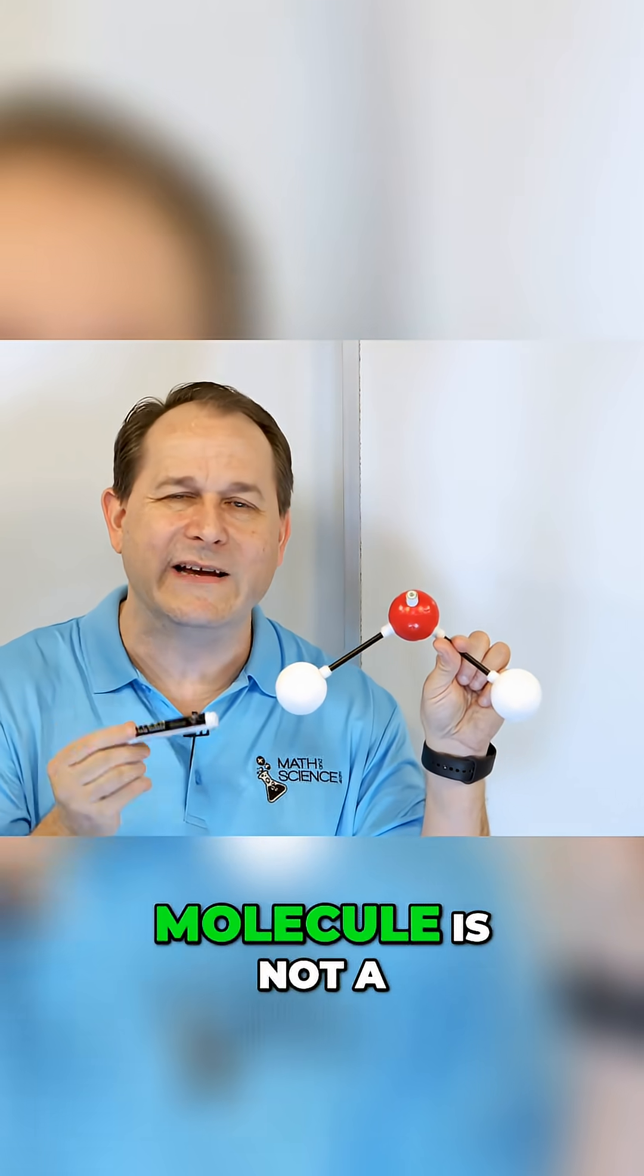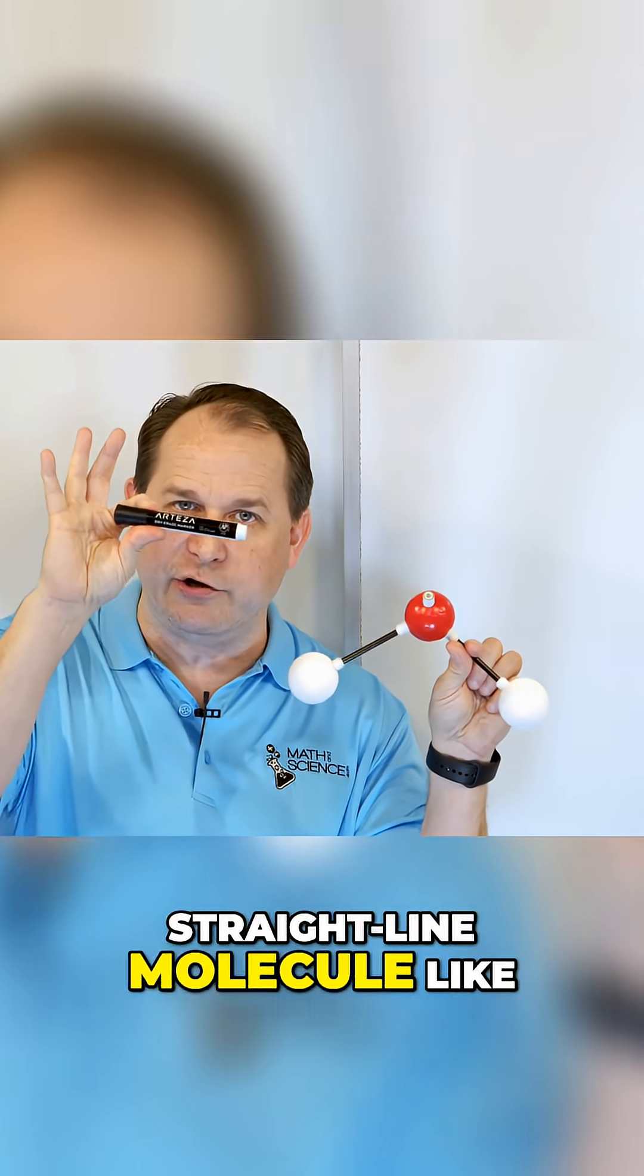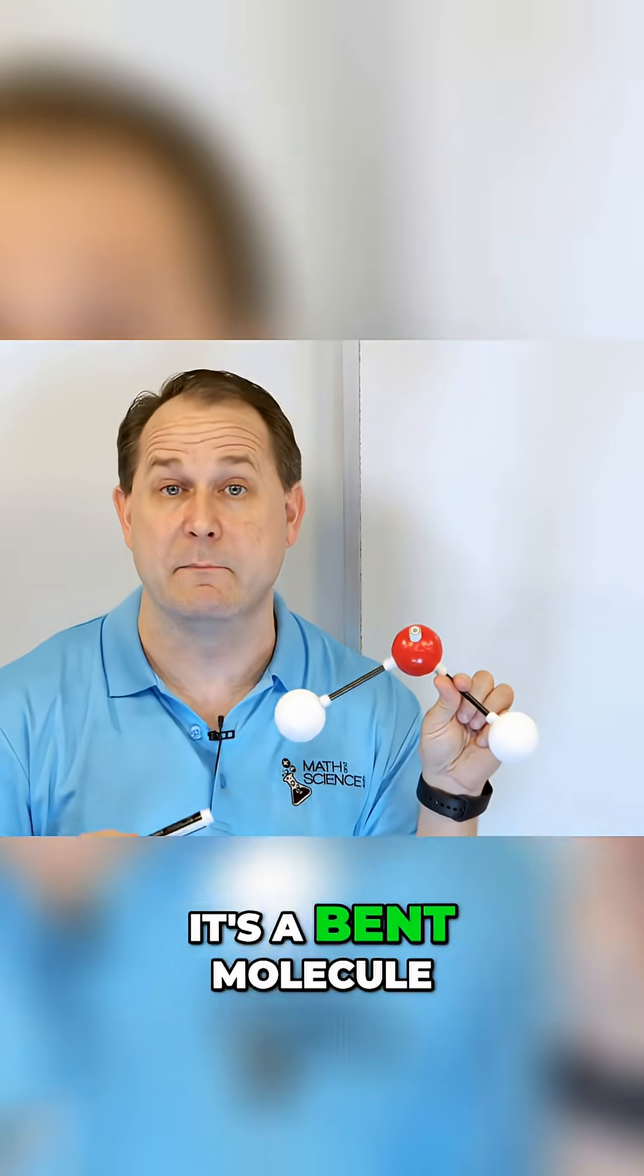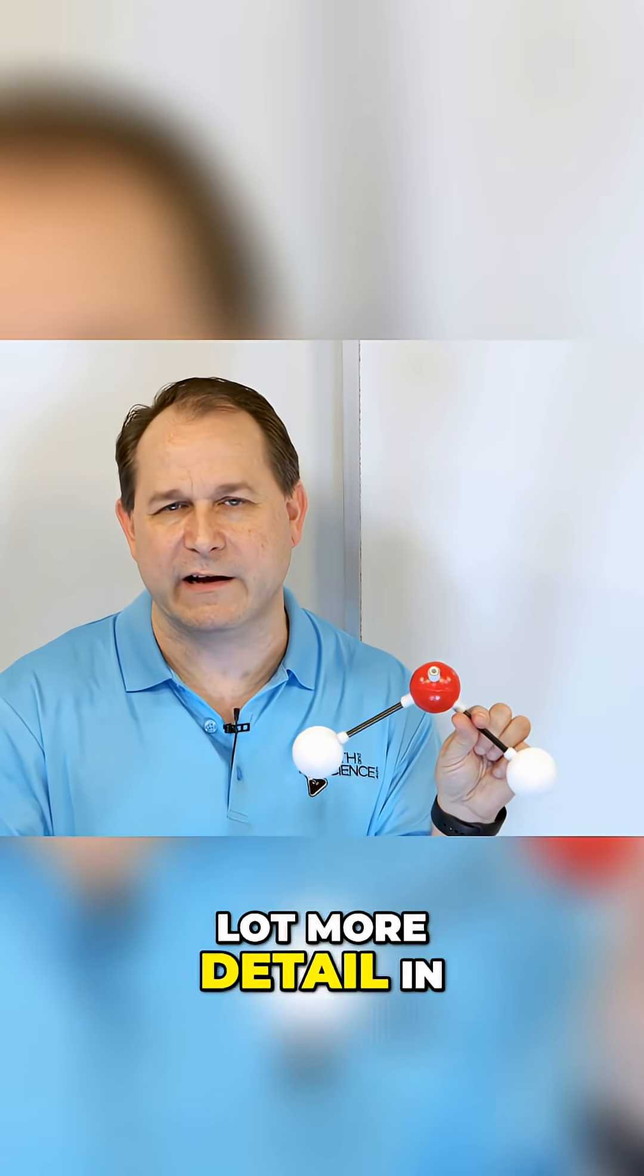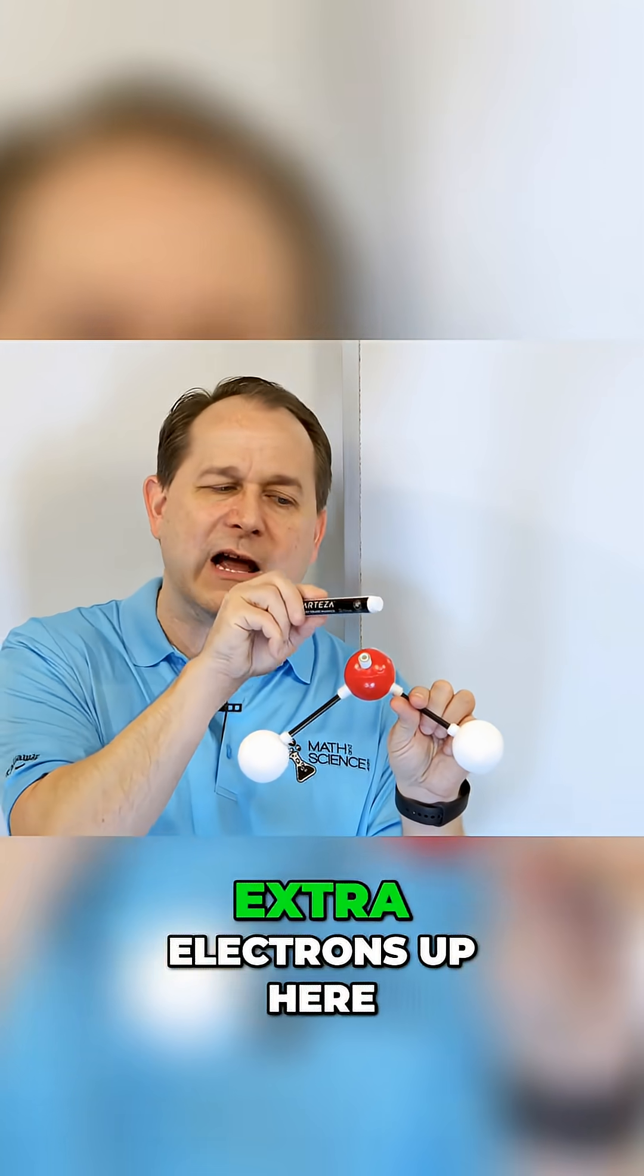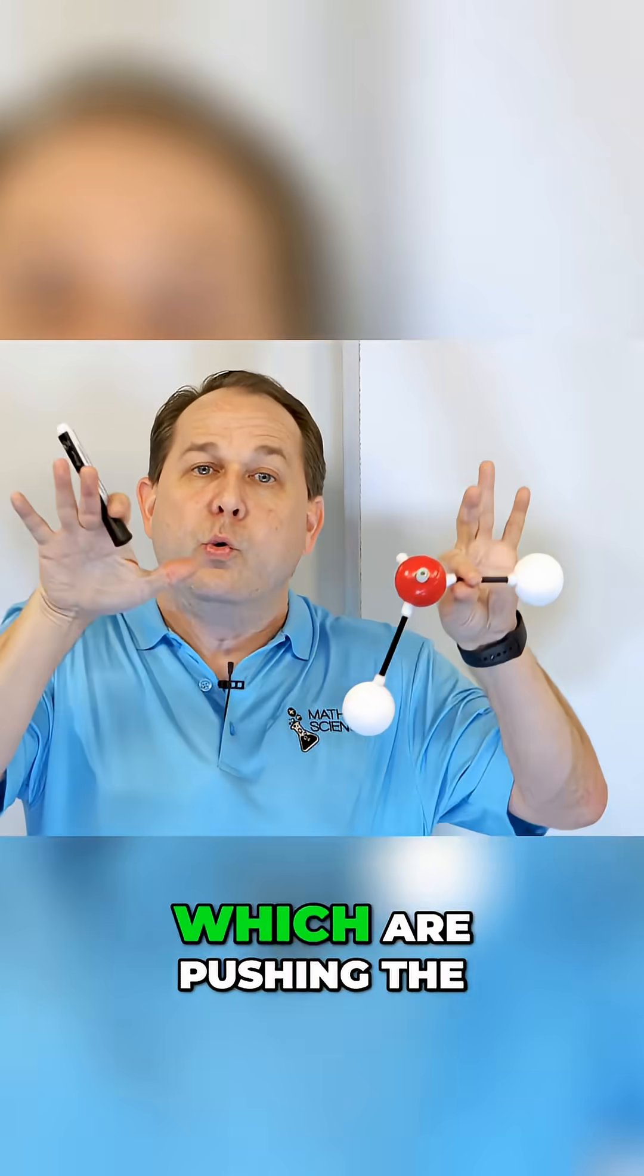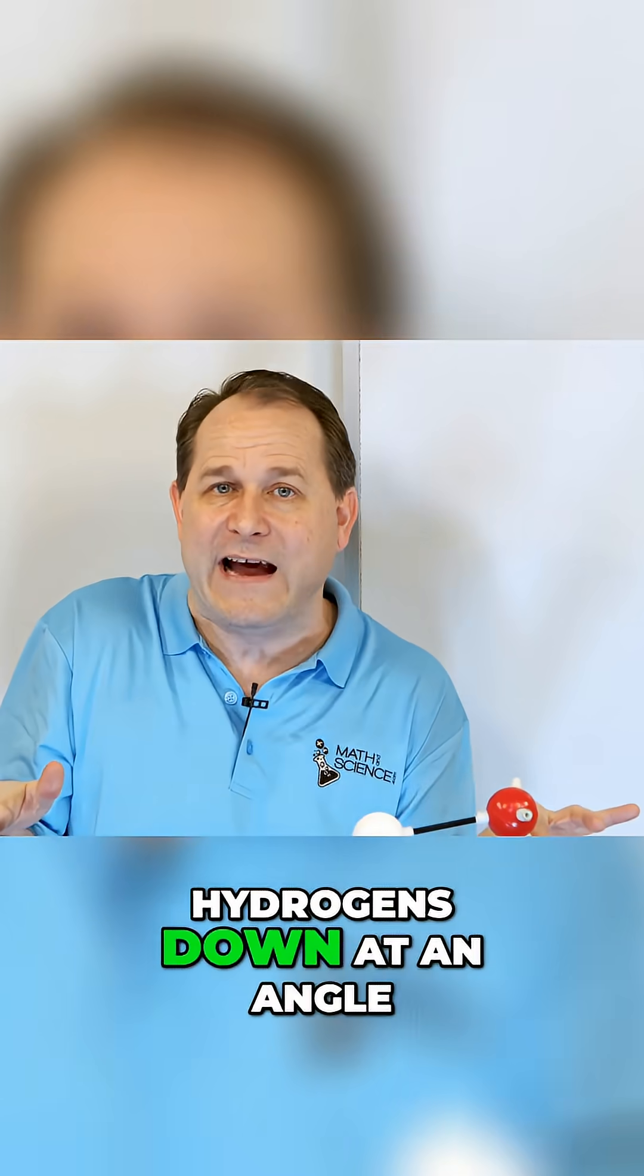Notice that this water molecule is not a straight line molecule like this pen is here. It's a bent molecule. The reason it's bent, we'll go into a lot more detail in my class, but basically there are extra electrons up here that I haven't shown that are up above this oxygen here, which are pushing the hydrogens down at an angle.